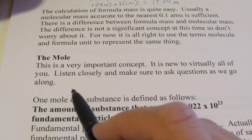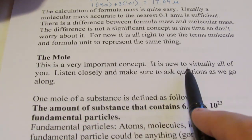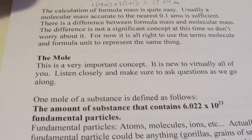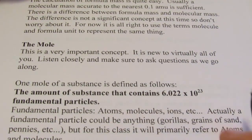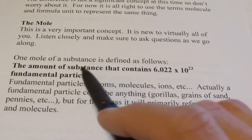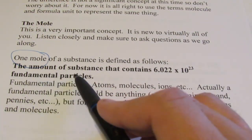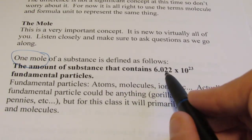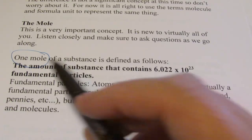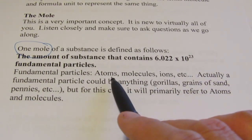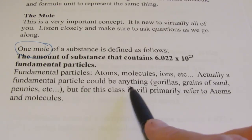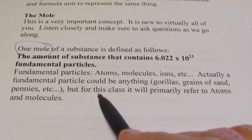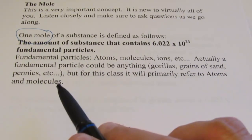Now back to the mole — this is a very important concept, new to virtually all of us. One mole of a substance is defined as the amount of substance that contains 6.022 times 10 to the 23rd of those particles. We call those fundamental particles, and in chemistry they could be atoms, molecules, or ions.